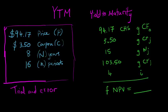The process we're going to follow in the calculator entries are $94.17, change sign for a negative cash flow. G, cash flow zero. $3.50, G, cash flow J for the first cash flow.